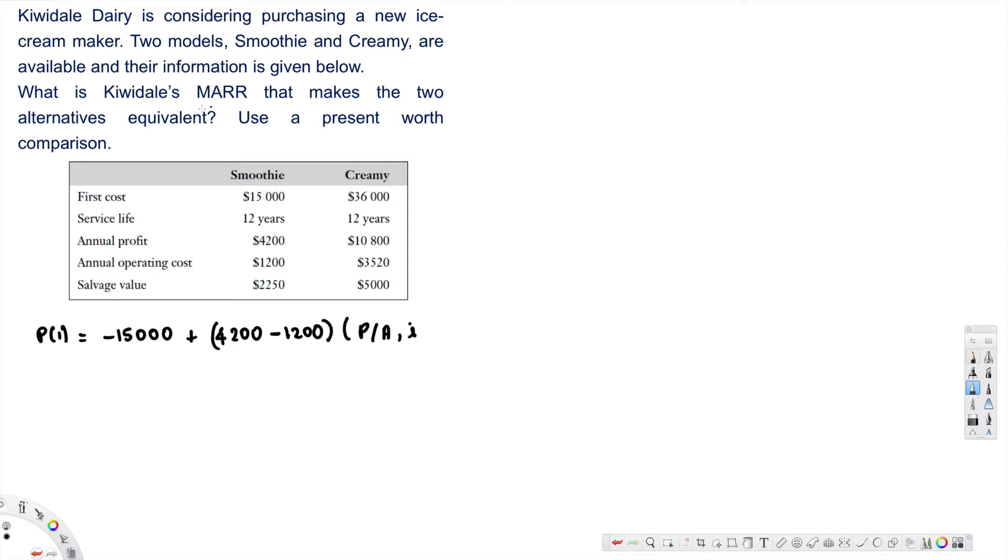This is for annual, which means 12 months, so I put 12 right here. And we also have another value, salvage value, that's positive $2,250, times P/F, i, 12.